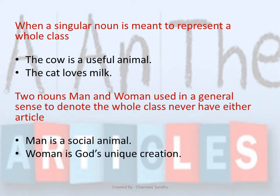When a singular noun is meant to represent a whole class, for example: 'The cow is a useful animal' — here 'cow' is used to refer to the whole class. However, the two nouns 'man' and 'woman', used in a general sense to denote the whole class, never have either article. So we don't say 'The man is a social animal' — we always say 'Man is a social animal.'